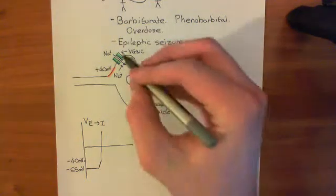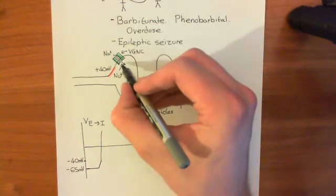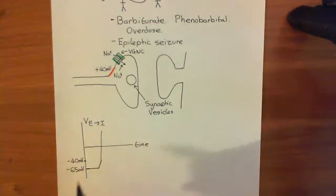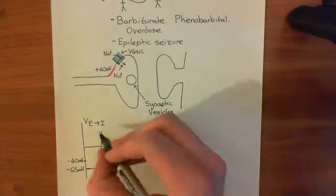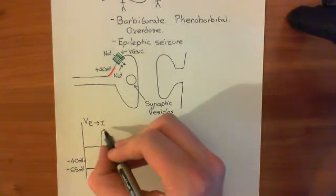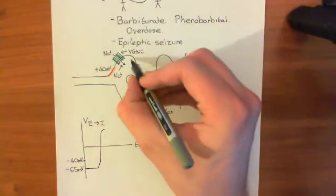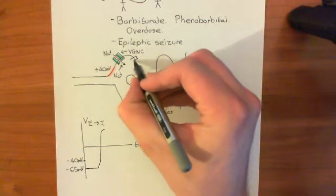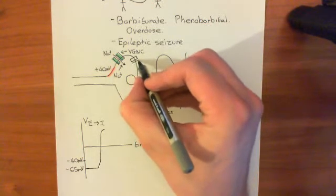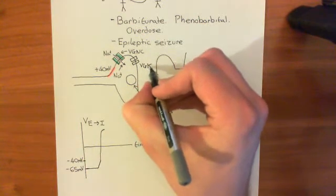These voltage-gated sodium channels open when the electrical potential difference across the cell membrane gets to minus 40 millivolts, which is the threshold potential for the opening of the voltage-gated sodium channels. They stay open for a little while and then start to close again. Just as they start to close, another type of channel in this membrane — the voltage-gated potassium channel — becomes relevant.